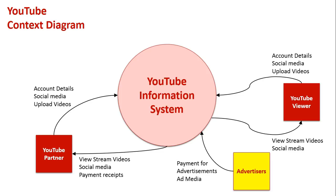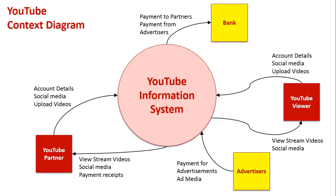The last part of the context diagram is the movement of money. The advertisers' money goes to the bank, so YouTube needs to send the payment from the advertiser to their bank. They've also got to then pay the partners, and in response those payment receipts need to come back to YouTube - firstly confirming they've received the advertisers' money, and secondly that the partners have then been paid by YouTube into their own bank accounts. That's where their payment receipts come from.